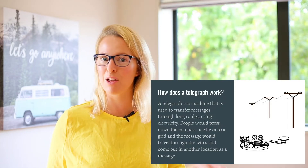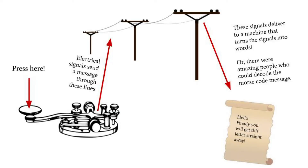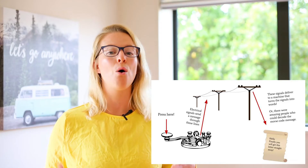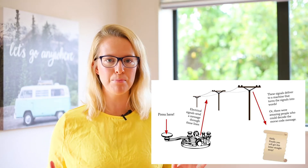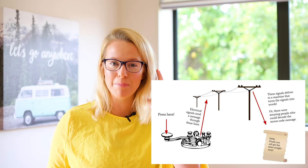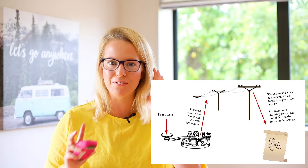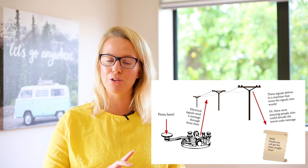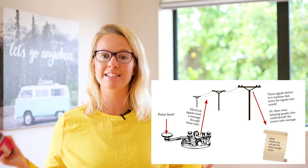Let's look at a little picture to see how that might have worked. So the person who had the machine would press the button where it says 'press here.' They would tap out different codes, then the electronic signals would send the message up through the wires, through the power lines, and these signals would be delivered to a machine that would turn the signals into words. Or there were some amazing people that could just listen to the Morse code making the dots and all the sounds, and they knew what the noises were and could write it into sentences.